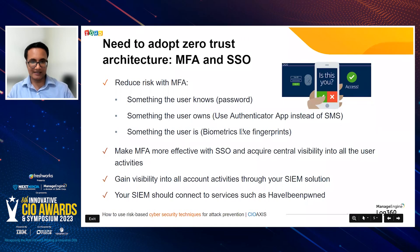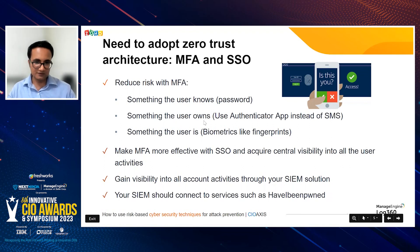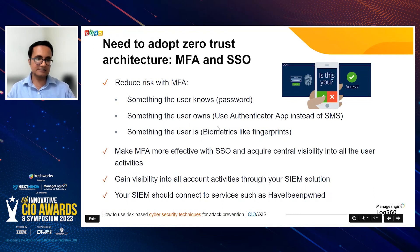Going back to MFA, it's got to be three things: something the user knows — the traditional username and password pair; something the user owns — their mobile phone, specifically an authenticator app, since you should always use an authenticator app instead of SMS-based OTPs; and something the user is — biometrics like fingerprints. These are essential elements for Zero Trust.